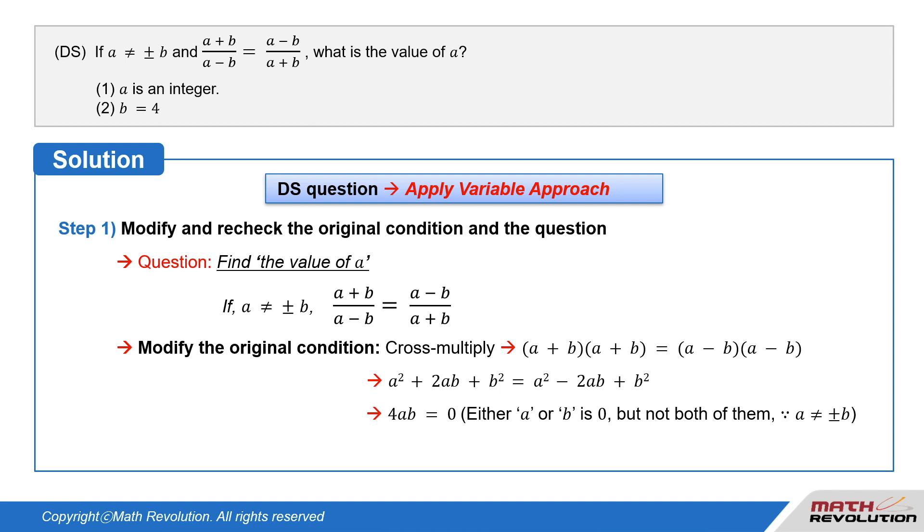This means either a or b is 0. But not both of them, as a is not equal to plus or minus b. So our question is to find the value of a. We can find the value of a if we know the value of b.